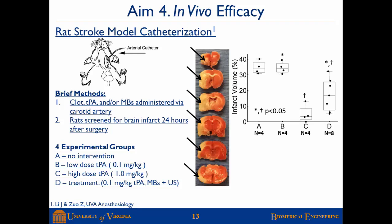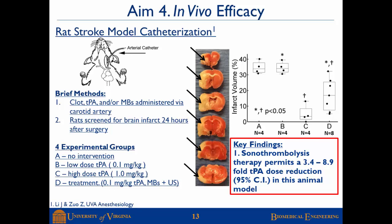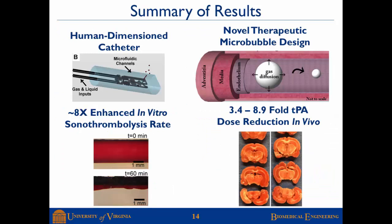Results are expressed as infarct volume percentage. Group A (no intervention) showed 30 to 40 percent infarct. Group B (low-dose TPA) did not significantly reduce infarct volume. Group C (high-dose TPA) significantly reduced infarct volume. Group D (sonothrombolysis with low-dose TPA) fell between Groups B and C — achieving results equivalent to between a low and high TPA dose, but using only a low dose. This indicates that sonothrombolysis therapy permits a three-and-a-half to eight-fold TPA dose reduction in this animal model.